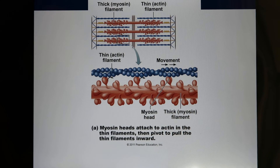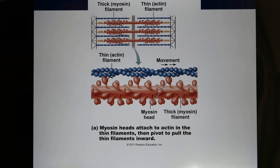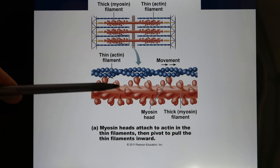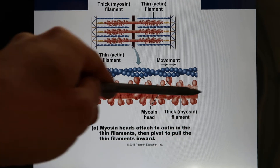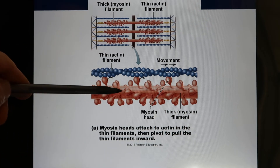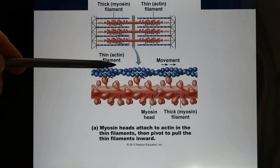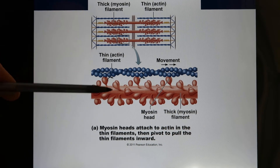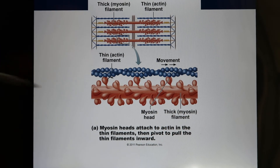Now let's look at the myofilaments. In the thin filaments, actin is the protein. In the thick filaments, it's myosin. These two proteins naturally want to bond — they are like two strong magnets that naturally want to glue together. Because of that, muscle can easily contract.